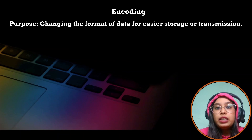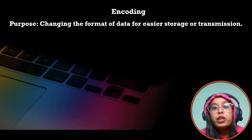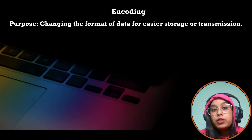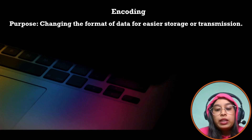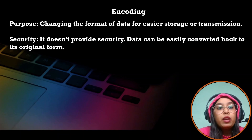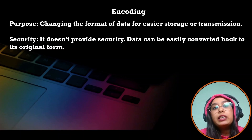Encoding is primarily used for data representation and transmission. It transforms data into different formats to ensure that it can be properly consumed by different types of systems without altering or modifying its meaning. The next characteristic is security — encoding is not meant for security; it doesn't provide any protection against unauthorized access or tampering of data.